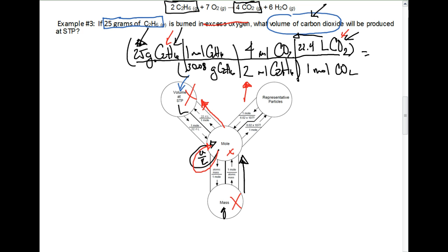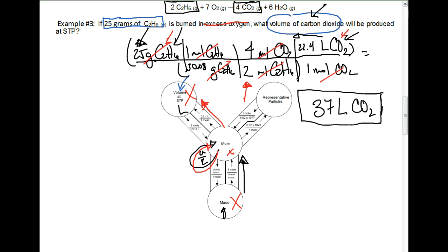A common mistake is forgetting to multiply in a coefficient on the bottom, which will throw the whole problem off. We calculate: 25 × 4 × 22.4, divided by (30.08 × 2). Rounding to two sig figs, we get 37 liters. Checking units: grams cancel, moles cancel, and we're left with liters of CO2 — which is what we were after. Now you know how to do mixed stoichiometry problems. You can start anywhere on the mole road and get anywhere on the mole road, as long as you know where to start and where to end.